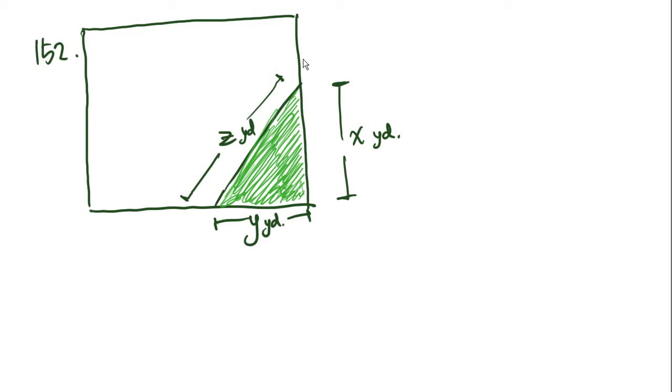Number 152 says the shaded portion of the rectangular lot shown above represents a flower bed. If the area of the bed is 24 square yards and x equals y plus 2, then z equals what? So they're saying that this green shaded triangular area is a flower bed with area as 24 square yards. And they also tell us that x, which is this line here, x equals y plus 2. So we know that x equals y plus 2.